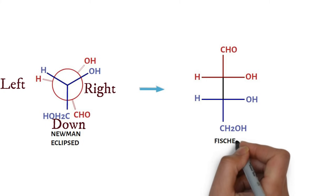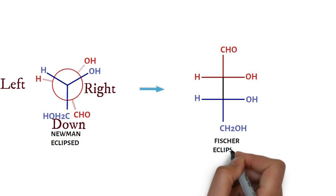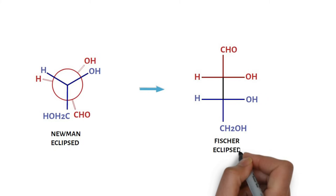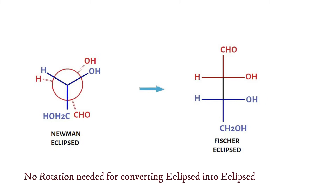This gives us the eclipsed Fischer projection. Notice that here we started with an eclipsed Newman projection, therefore no rotation of carbon or change of direction of substituents is needed here.